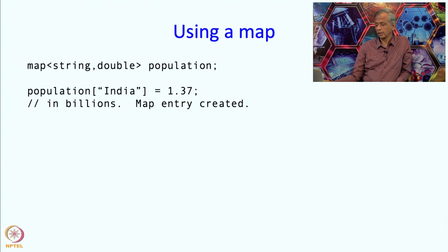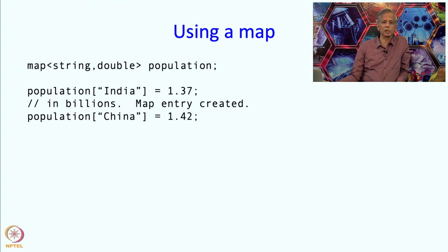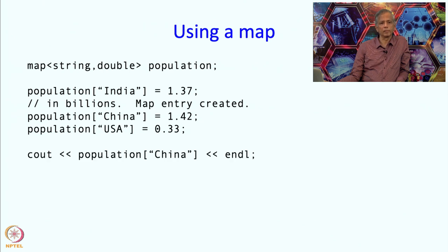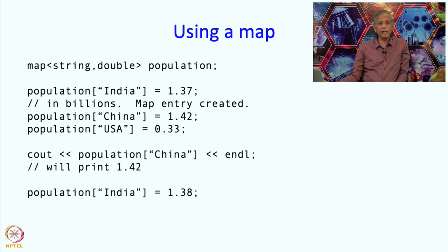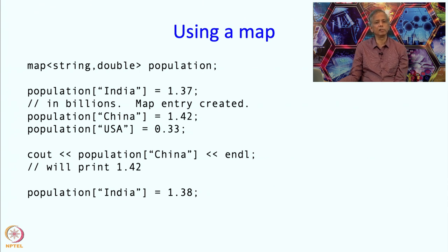A map entry or map element has been created. I can create more and more entries and I can print out what is stored in the map. If I write cout << population["China"] this will print out 1.42. I can update the entries as well. Suppose I just realized that this was an old entry and the new population is slightly larger - I can put in the new population, so 1.37 will go away and it will be replaced by 1.38.